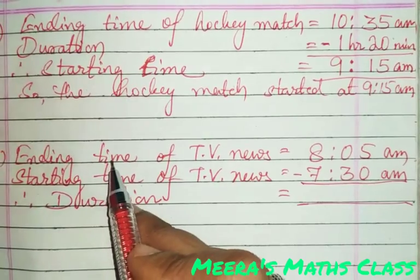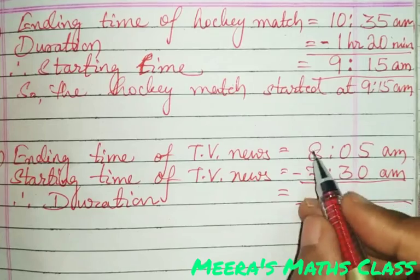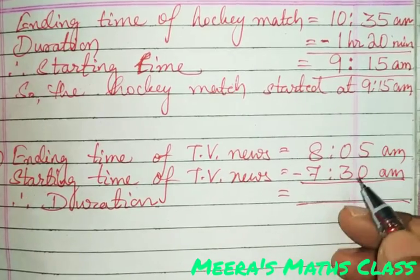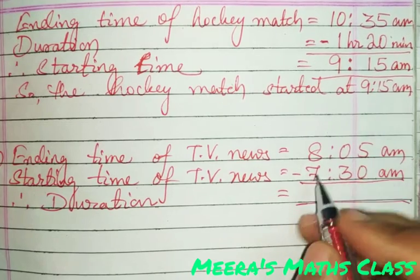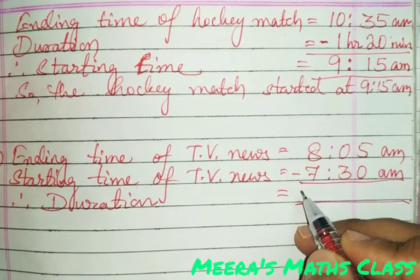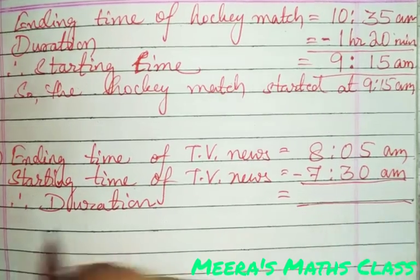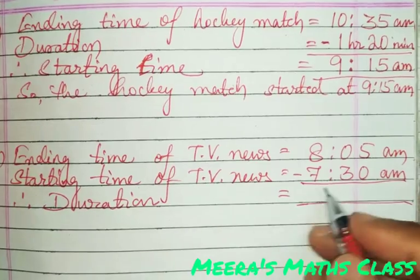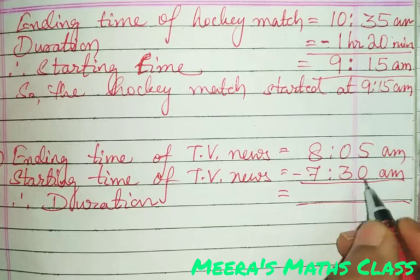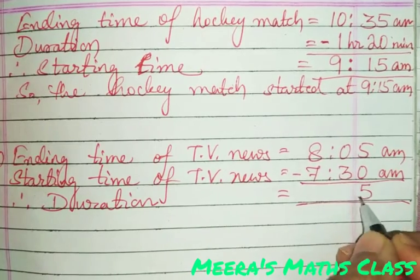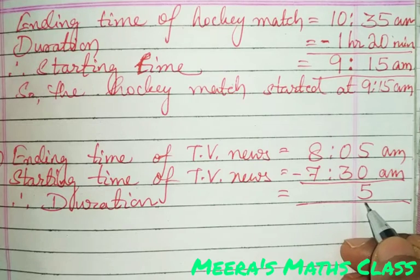You always write the ending time on top and starting time below it because the ending time is always greater than the starting time. For subtraction, you always need the greater number on top. To find the duration, subtract the starting time from the ending time. Now, 5 minus 0 is 5 — but wait, I made a mistake.